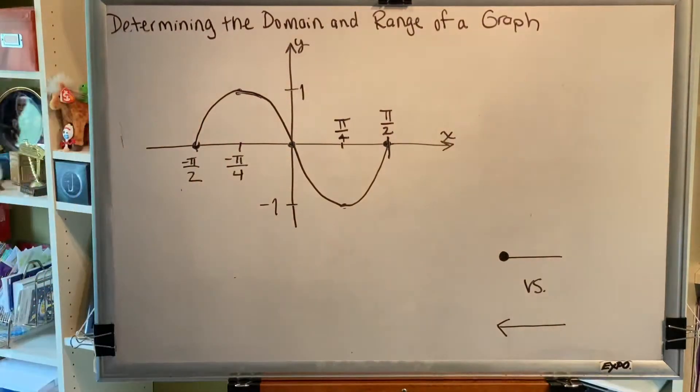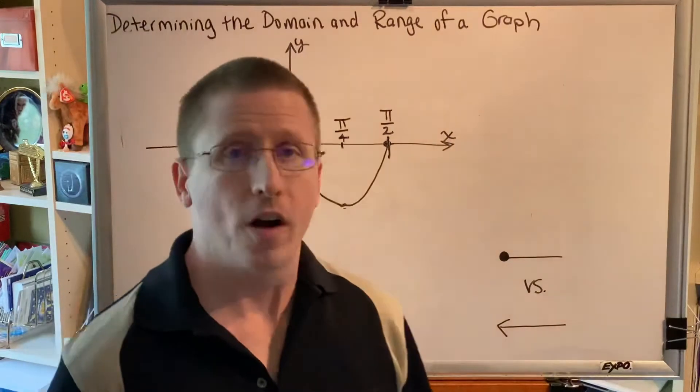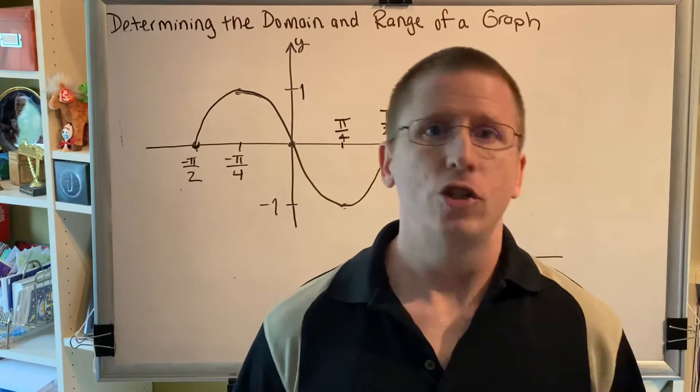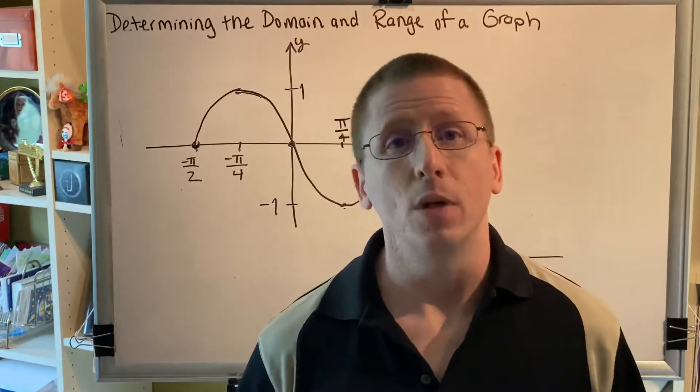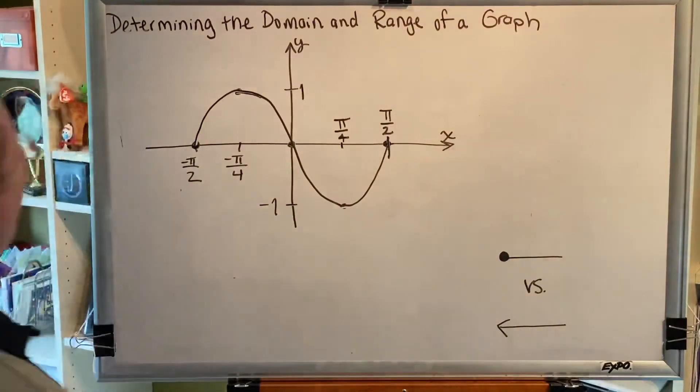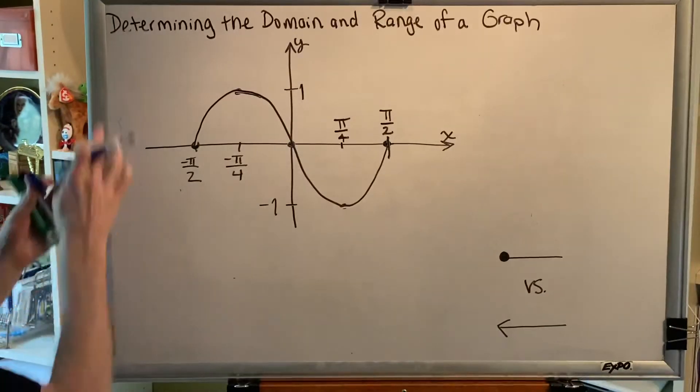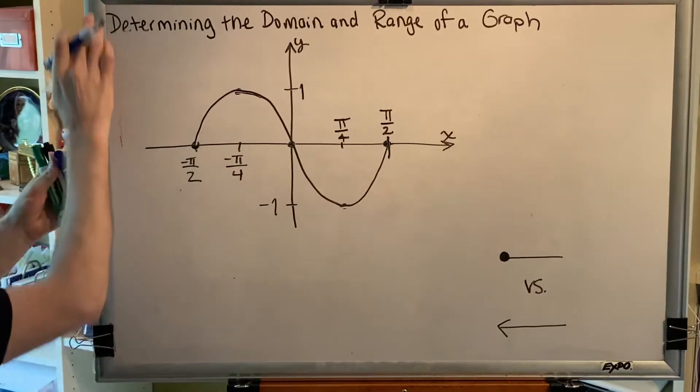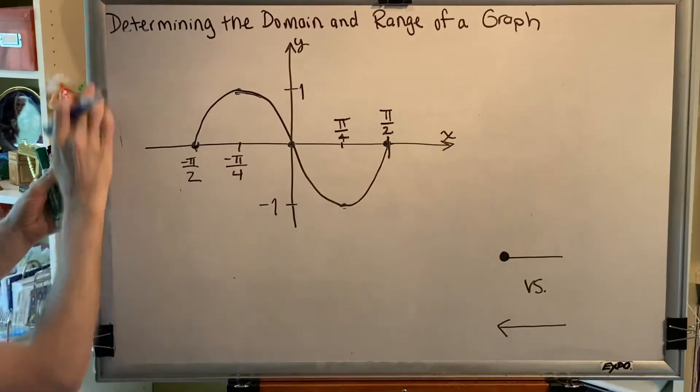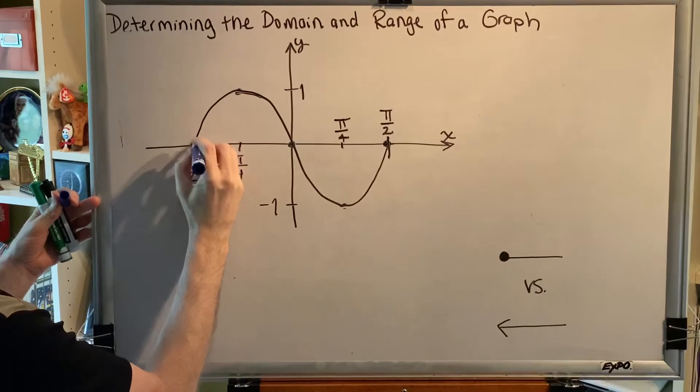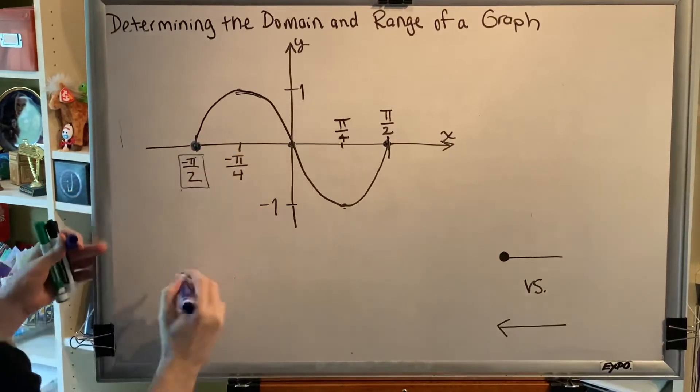So when we are looking for our domain, we just have to ask ourselves this question. How far does the graph go to the left? How far does the graph go to the right? And do we have all of the points in between? So the graph furthest, the point on this graph that is farthest to the left, that would be the point on the black curve that is closest to this silver border, would be this one right here. And it has an x coordinate of negative pi over 2.